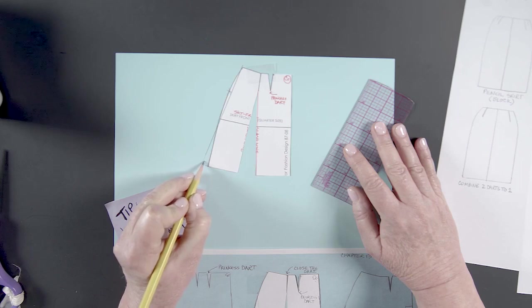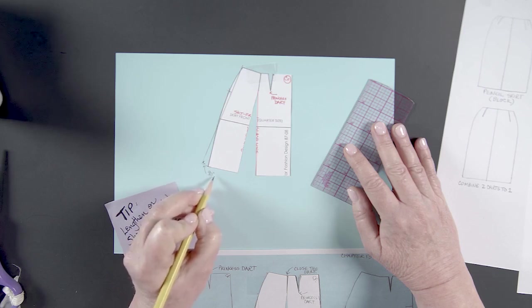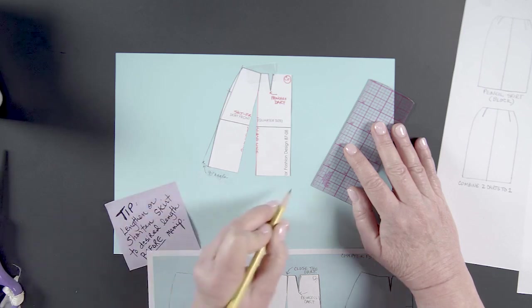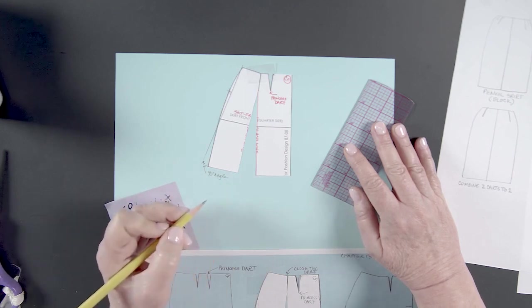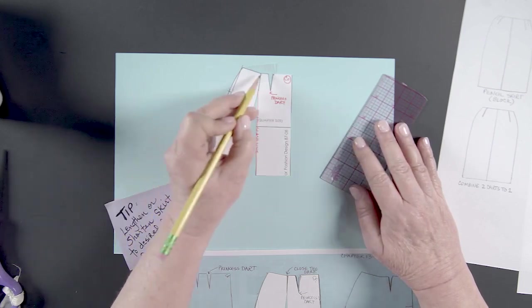We end up cutting off this hip curve here. This always needs to be a 90 degree angle. This mark here shows that that's a 90 degree angle. And why do we need that? We need that because when we add seam allowance there, that's going to help us hem that so much easier.